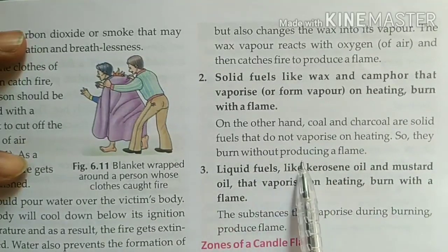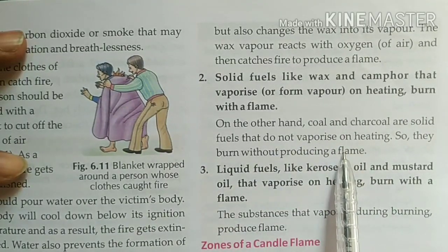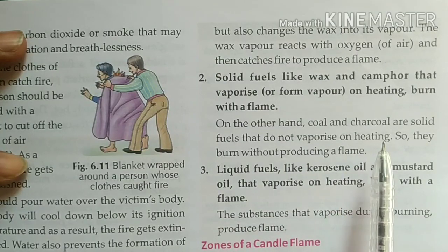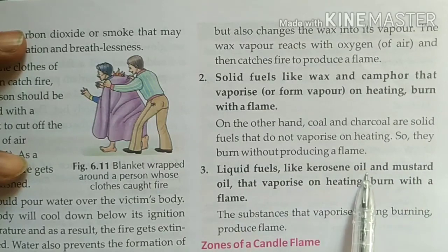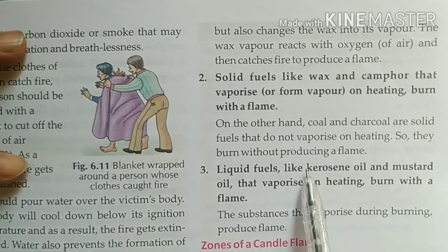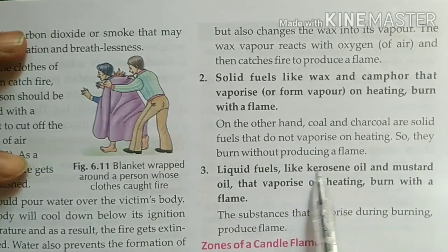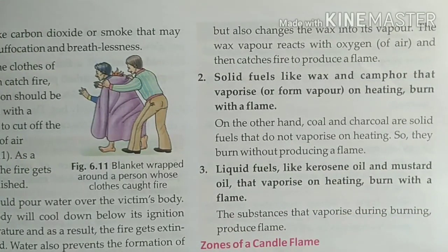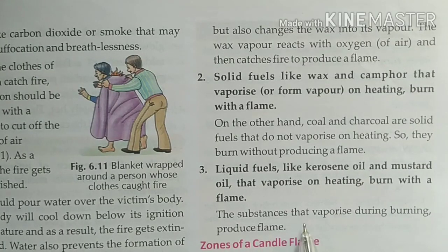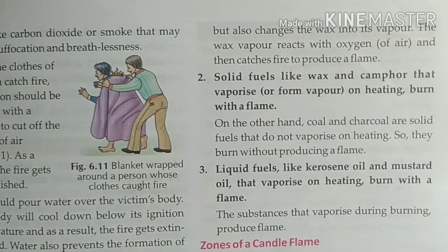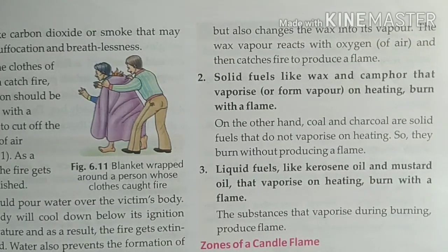Solid fuels like coal and charcoal do not vaporize on heating, so they burn without producing a flame. However, liquid fuels like kerosene oil and mustard oil vaporize on heating, and when converted to vapor form, they burn with a flame. The substance that vaporizes during burning produces a flame.